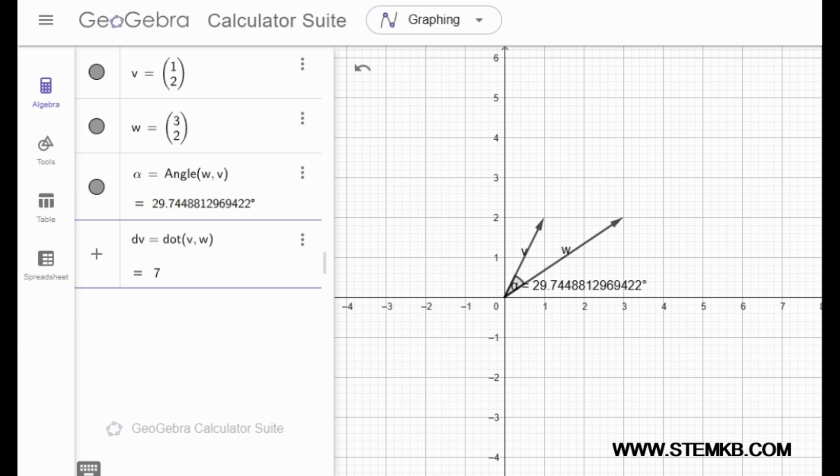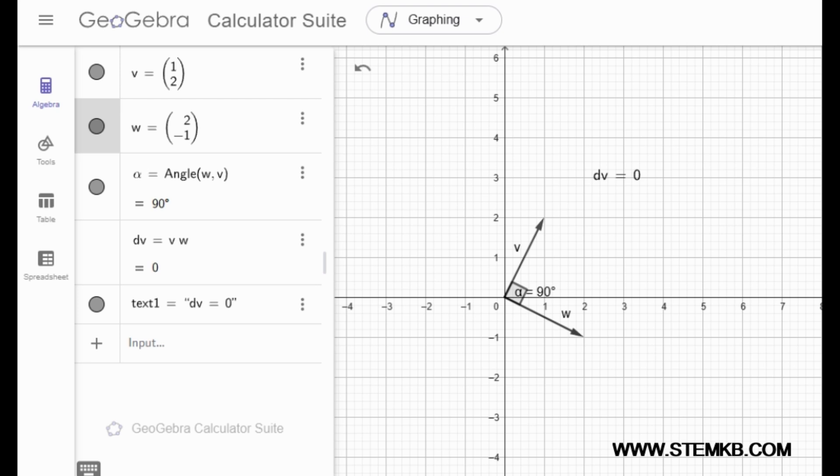The first way is using the command dot in parentheses V W. V and W just represent the names of your vectors in GeoGebra, like whatever you name them. So it's like telling GeoGebra, hey, find the dot product of these two vectors, and it just does it. Exactly, it's that simple. No complicated formulas or anything. I love how intuitive GeoGebra is. It's designed to make math accessible, even if you're not a math whiz. Okay, so that's the first method.